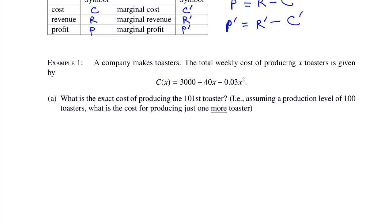Example one: a company makes toasters. The total weekly cost for producing X toasters is given by C of X equals 3000 plus 40X minus 0.03X squared. Question A: what is the exact cost of producing the 101st toaster? The exact cost is delta C. When you put an X value into the function, it tells you the cost of producing that many toasters from the first all the way up to that toaster.